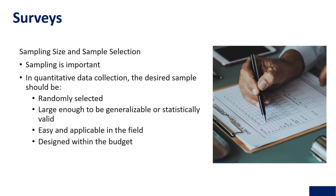Issues around surveys you have to think about include sampling size and sample selection, a key principle of quantitative data collection. The sample has to be randomly selected and large enough to be generalizable or statistically valid, as well as easy and applicable in the field and designed within the budget you have available.